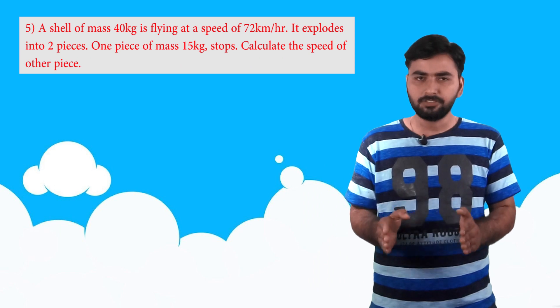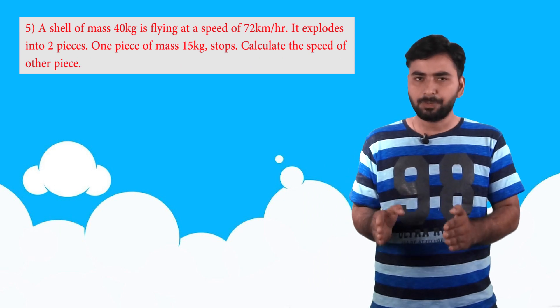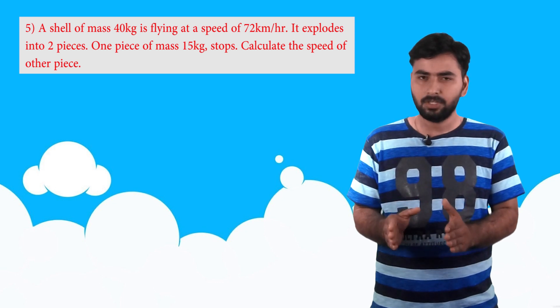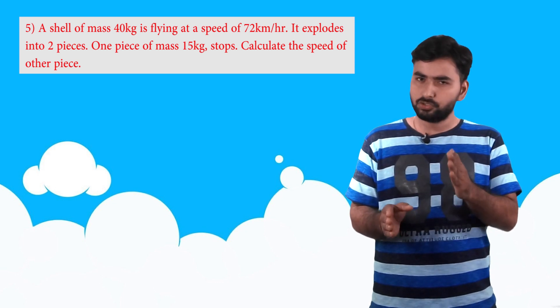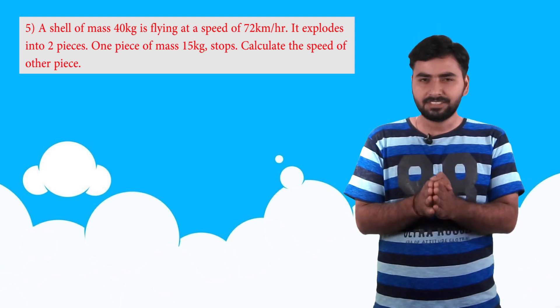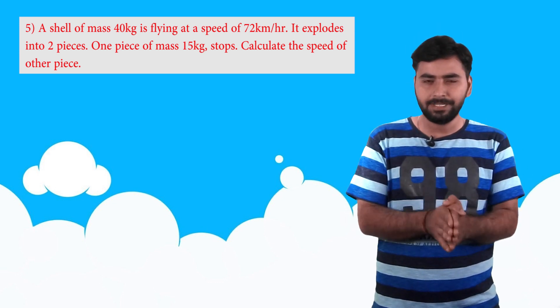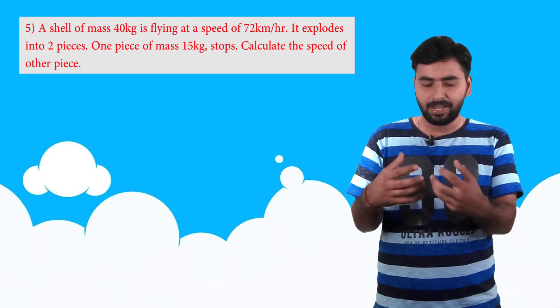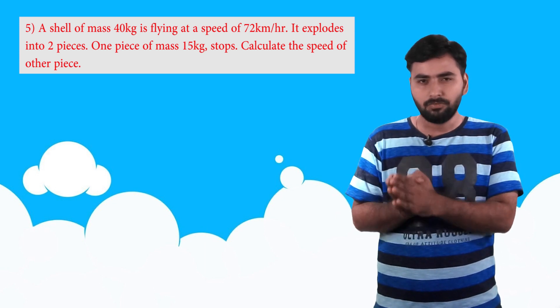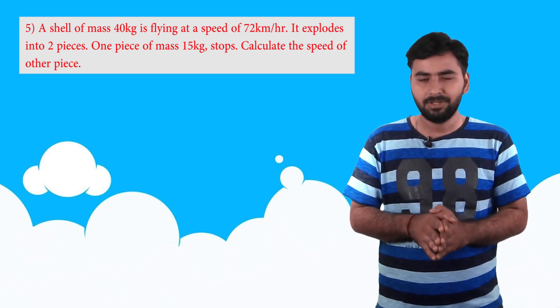A shell of mass 40 kg is flying at a speed of 72 km per hour. It explodes into two pieces, one of mass 15 kg stops. We need to find the speed of second piece. So obviously this is based on law of conservation of momentum, where we learned that for any isolated system, the total initial momentum is always equal to total final momentum.